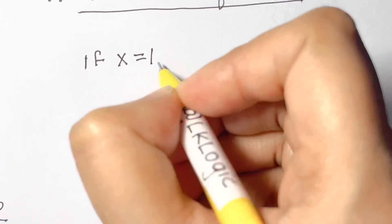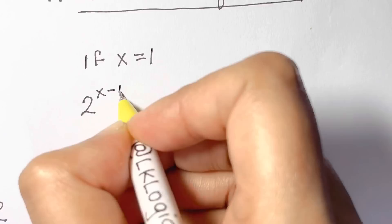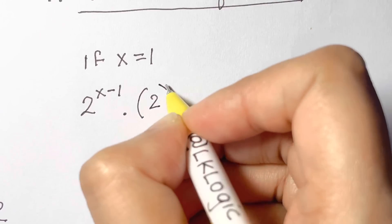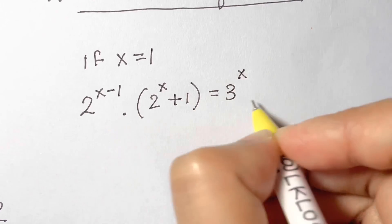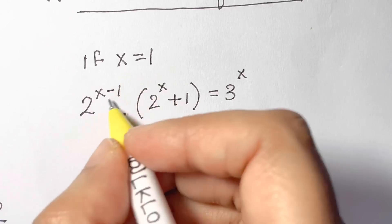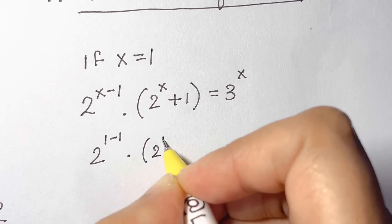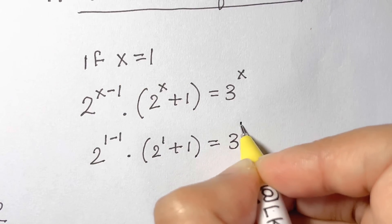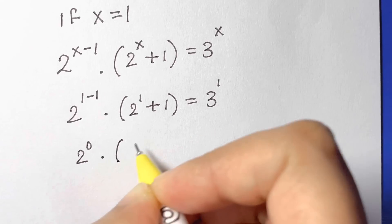If x equals 1: from equation 1, 2 to the power of (x minus 1) times (2 to the power of x plus 1) equals 3 to the power of x. Substituting x equal to 1, we get 2 to the power of (1 minus 1) times 2 to the power of (1 plus 1) equals 3 to the power of 1, and 1 minus 1 is 0.